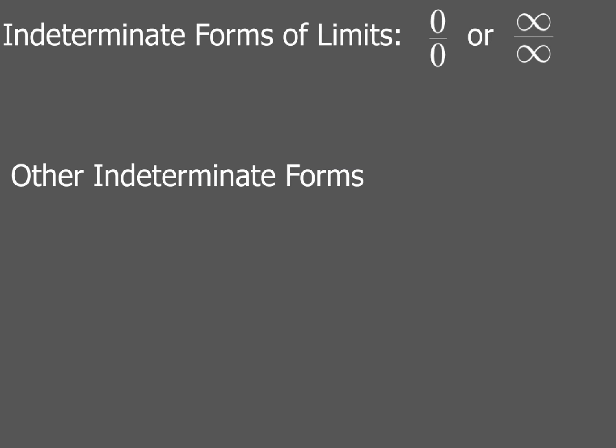Now remember, indeterminate forms are going to have this form - they're either going to be 0 over 0 or infinity over infinity, and when we evaluate limits, we've got to get them into one of those two forms. Sometimes you'll see them in one of these other forms, and if you see it in one of these other indeterminate forms, we're going to have to use some math trickery to use our algebraic skills to get it to be 0 over 0.